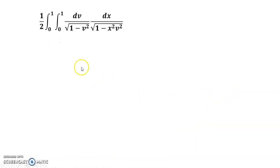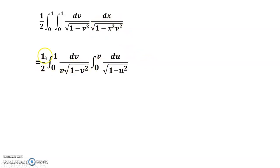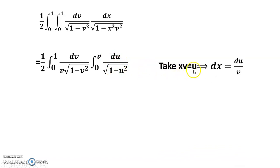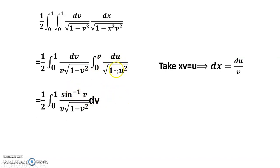So we have one-half times the double integral from 0 to 1 and 0 to 1 of dv divided by the square root of 1 minus v-squared, times dx divided by the square root of 1 minus x-squared v-squared. Now I take the substitution xv equals u, so dx equals du over v. When x equals 0 it is 0, and when x equals 1 it is v. After integrating, this gives sin-inverse(v), and we obtain the integral from 0 to 1 of sin-inverse(v) divided by v times the square root of 1 minus v-squared dv.